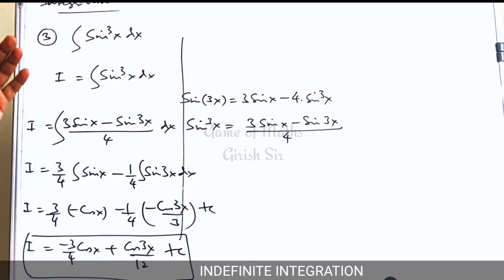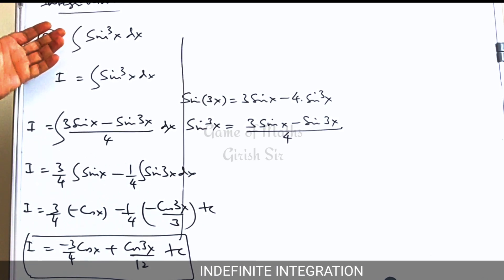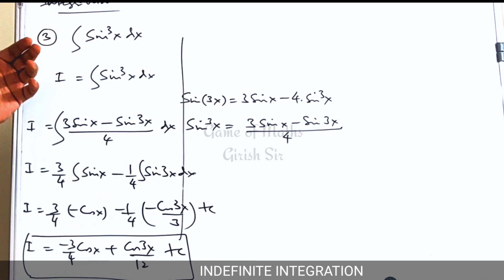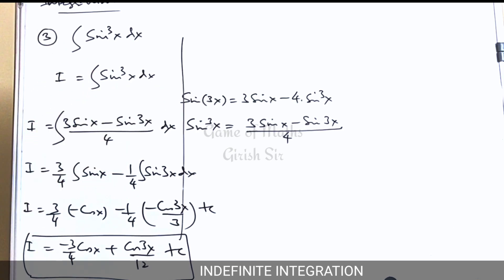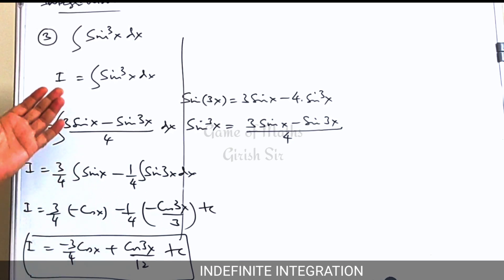You need to understand: if you are given high powers, we try to make it a linear function. For that you may have to use standard results — maybe cos 2x or cos 3x — depending on the expression given in the question.